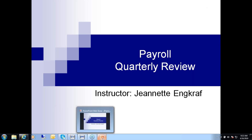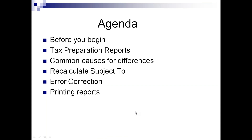For our agenda today, we're going to talk about some things before you start processing the quarter end — things you need to be aware of. Then we'll take a look at the tax preparation reports. We'll talk about common causes for differences, how to recalculate subject-to amounts on your employees, error correction, and then I'm going to demonstrate a little bit in Atrix, showing you how to launch that program and print some of the quarterly reports.